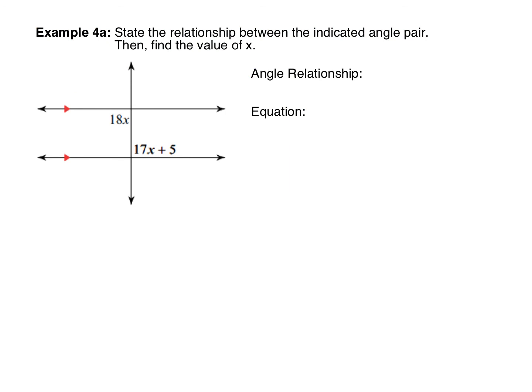For our last type of example, we state the relationship between the indicated angle pair and find the value of X. The two lines are marked as parallel by red arrows, so we can use all the relationships from this lesson. The expressions 18x and 17x plus 5 are both interior angles between the two parallel lines, and they're on opposite sides of the transversal, which makes these alternate interior angles. Alternate interior angles are congruent by the alternate interior angles postulate.